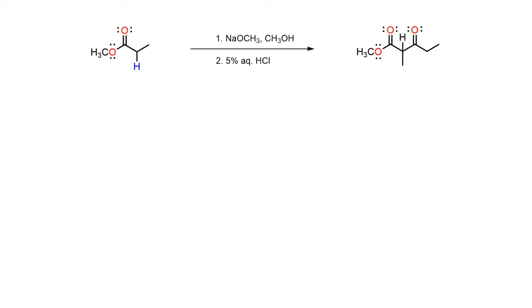Enolizable esters react in basic conditions to give, after a quench step, beta-keto ester products. The reaction is an intermolecular self-condensation through a nucleophilic acyl substitution pathway.